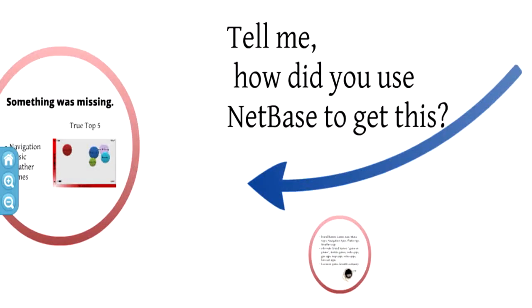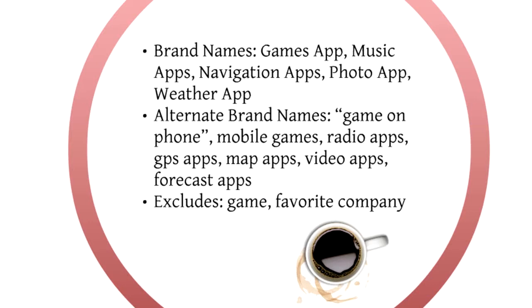How did we use NetBase to get to this information? We looked at brand names — in the topic we put in the brand names and used the categories. So 'games app' was one topic, 'music apps,' 'navigation apps,' and such. We also used alternative brand names, because you may be talking about a great killer game app but say 'the game on my phone is great,' or instead of a 'navigation app' you might say 'GPS app' or 'map app.' So we tried to think of all the ways you could voice the different categories. We also excluded the word 'game' — we noticed a lot of games would come up in other categories, so unless it was a true game, we didn't want it showing up in weather apps. We excluded games and broader programming terms as well.